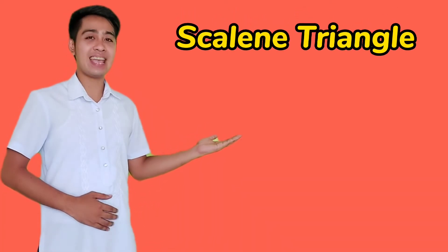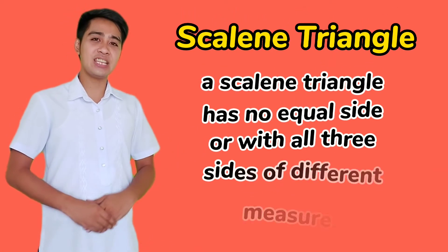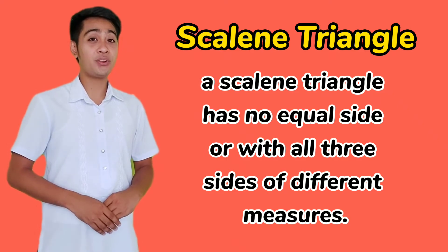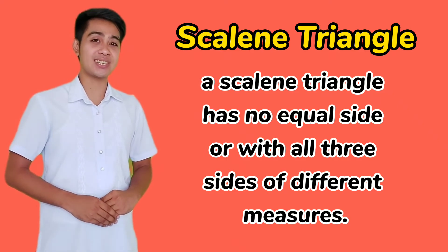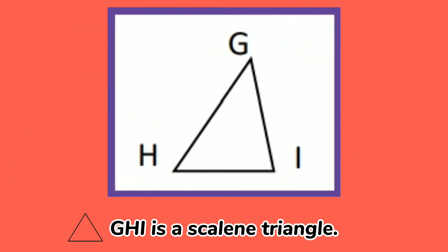The third one is the scalene triangle. A scalene triangle has no equal sides, or all three sides have different measures. Triangle GHI is a scalene triangle.